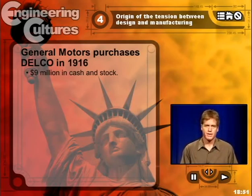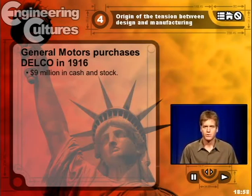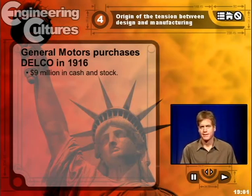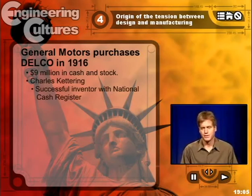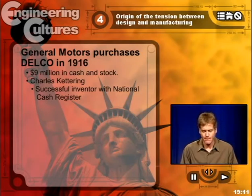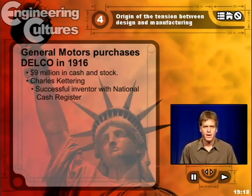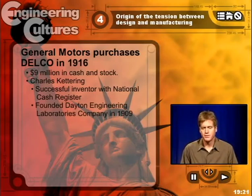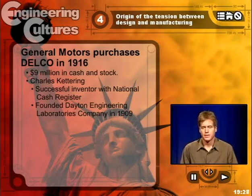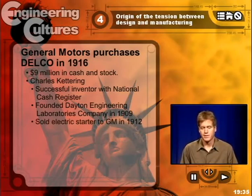In order to bring this Engineering Laboratories Company into GM, these labels are important — the label 'laboratory' is crucially important for our story. Charles Kettering had been a successful inventor inside a company called National Cash Register. In order to take advantage of a new invention he developed — a battery ignition system — he founded Delco, the Dayton Engineering Laboratories Company, in 1909 to exploit this invention. It worked well. He developed the first self-starter unit and sold it to General Motors in 1912 for the Cadillac.